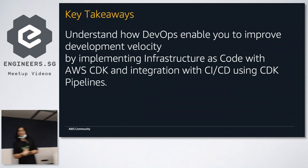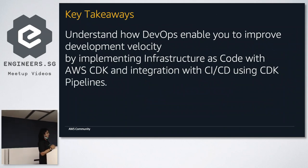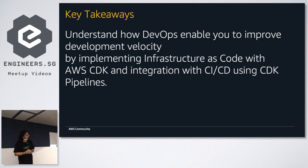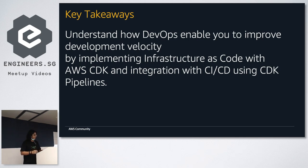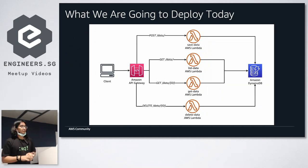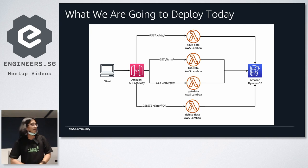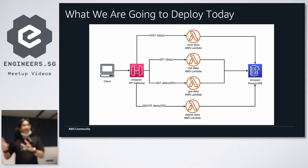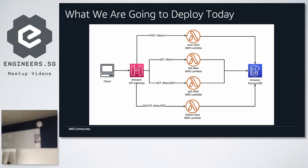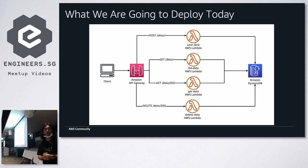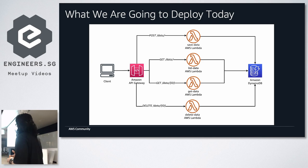These are the key takeaways for this session. I'm hoping that after this session you understand how DevOps can enable you to improve development velocity by implementing IaC and CI/CD and how to integrate with AWS CDK. This is what we're going to deploy today. I have everything ready on my laptop. The architecture is a serverless API — a simple REST API with four AWS Lambda functions, everything centralized within Amazon API Gateway, and all Lambda functions also integrated with Amazon DynamoDB.